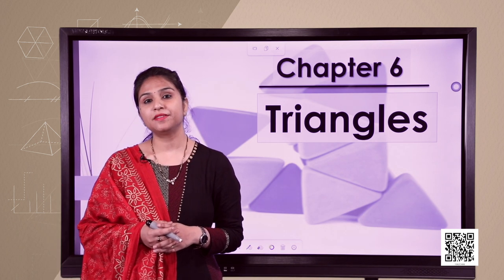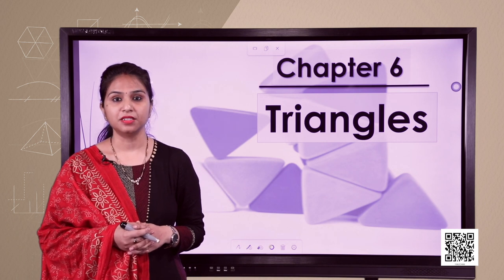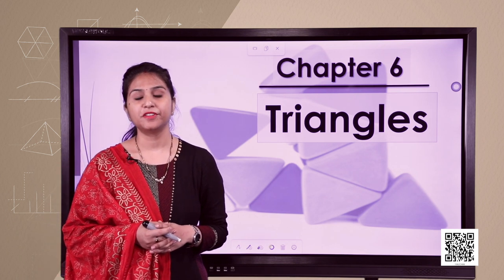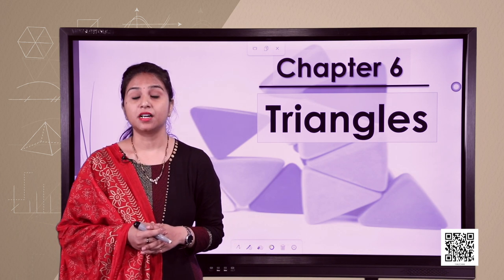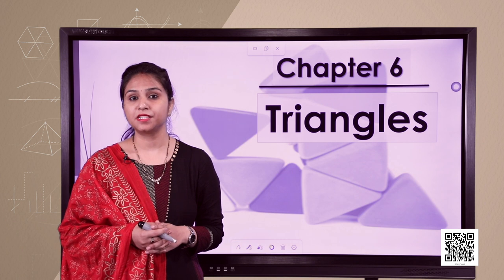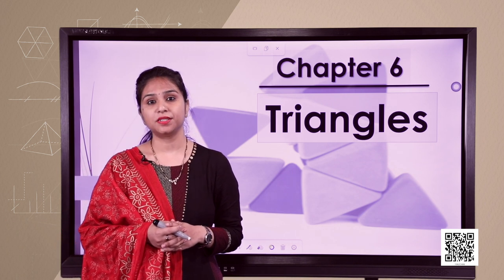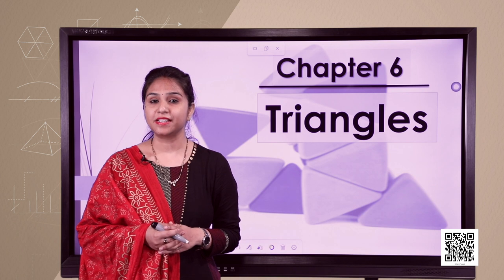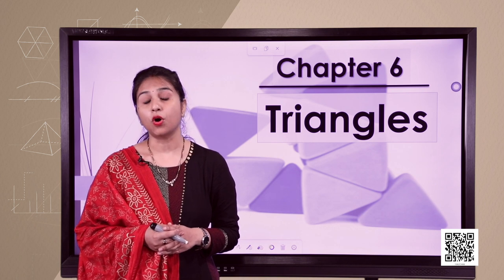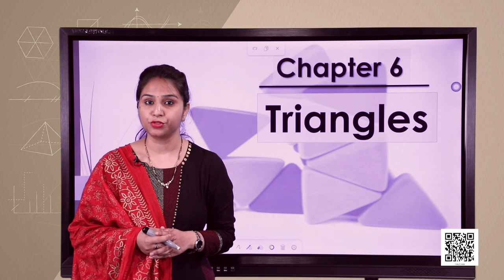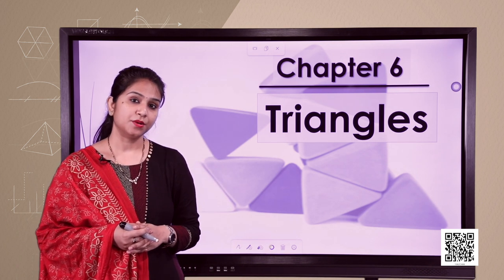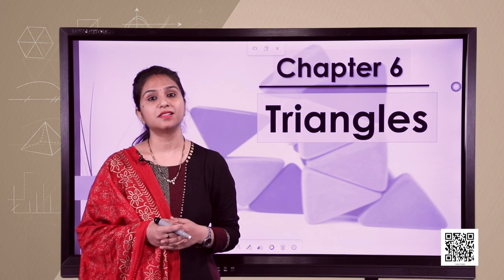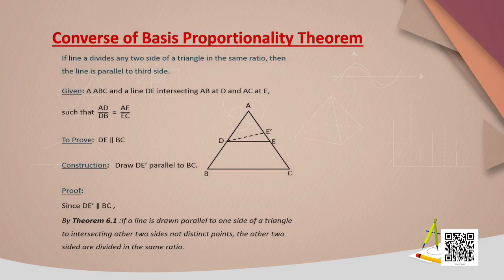The Basic Proportionality Theorem says that if in a triangle there is a line segment which is parallel to one of the sides of a triangle and it intersects the other two sides at two distinct points, then those two other sides are divided in an equal ratio — we can say the two sides are in proportion. We have already learnt how to prove this theorem. Now in today's session we are going to start our discussion with the converse of BPT, that is the converse of Basic Proportionality Theorem.